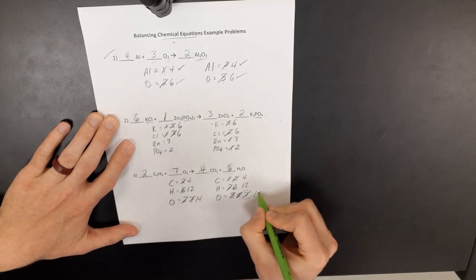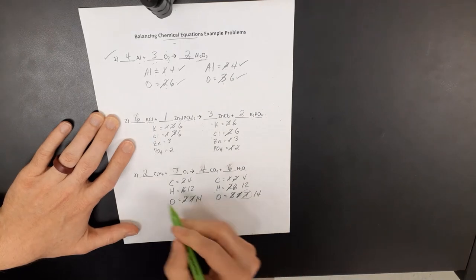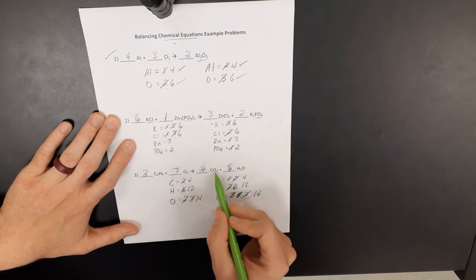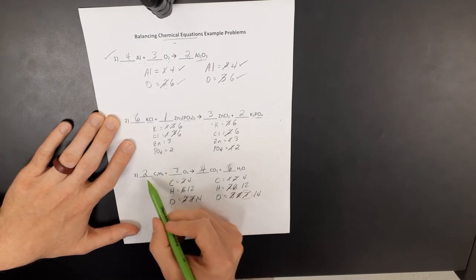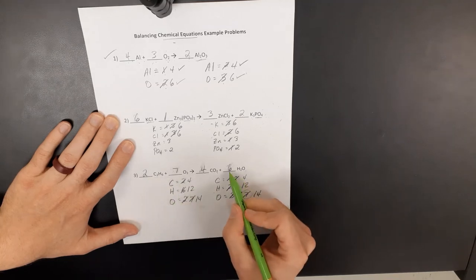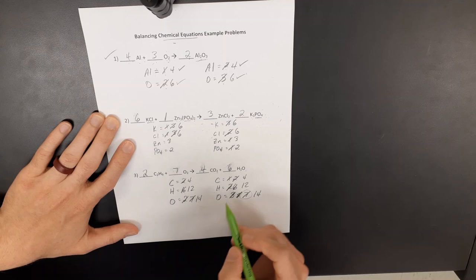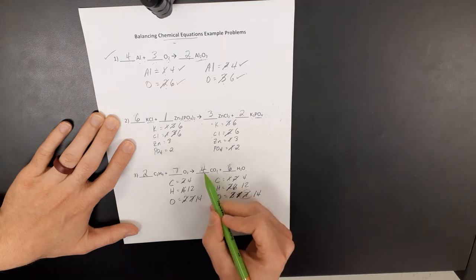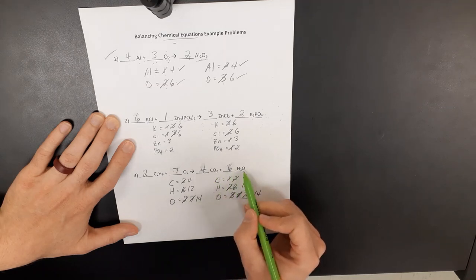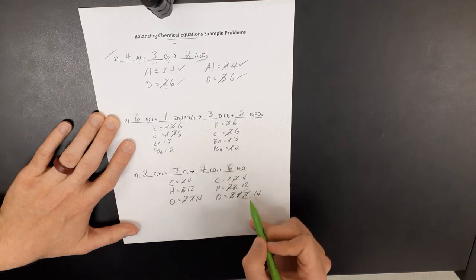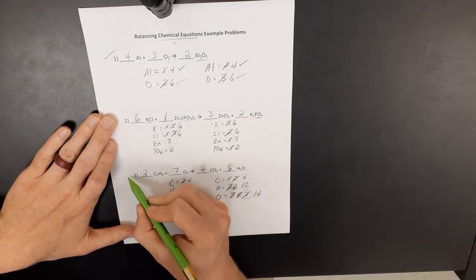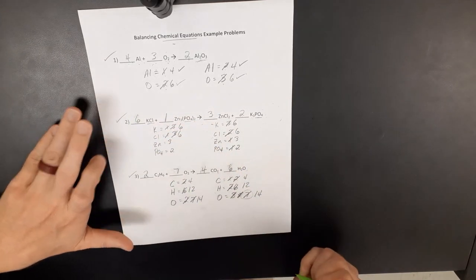And so what that would have done is doubled every number that we have down here. And you're welcome, of course, to go back and double check. But four carbons, four carbons, 12 hydrogens, 6 times 2 is 12 hydrogens, 7 times 2 is 14 oxygens. There's 4 times 2 is 8, plus 6 more, and 8 plus 6 is 14. And so everything there is balanced.